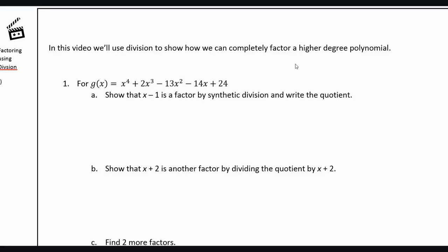In this video, we're going to put together what we've learned about polynomial division to completely factor this polynomial. So we've got g(x) equals x to the fourth plus 2x cubed minus 13x squared minus 14x plus 24, and we want to completely factor it. So part a gives us a hint. It says, show that x minus 1 is a factor by synthetic division, and write the quotient.